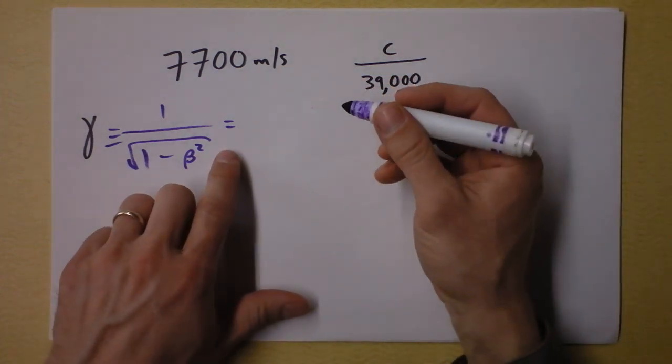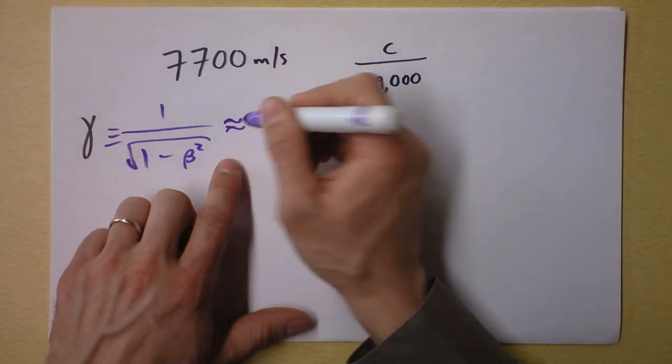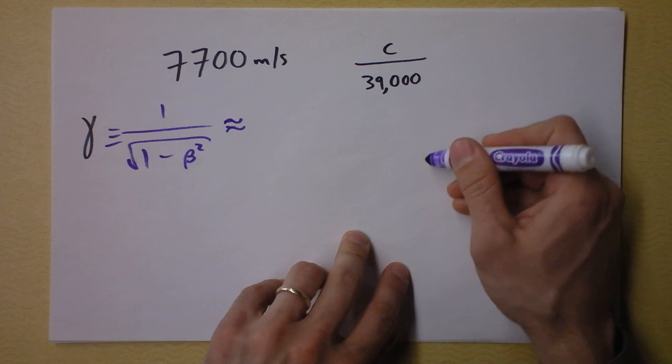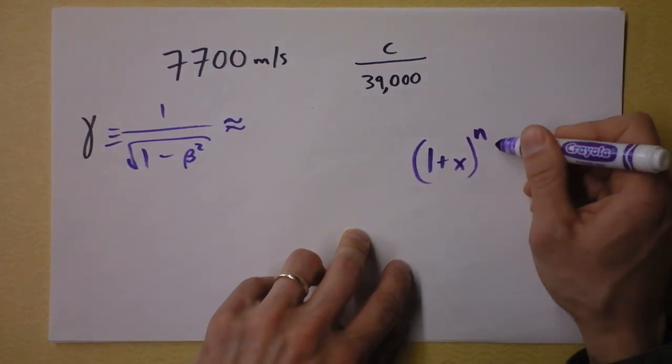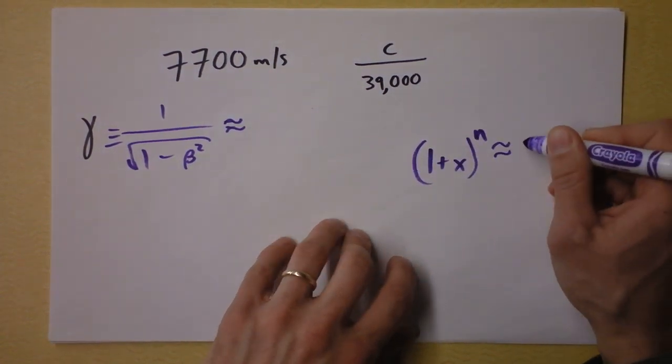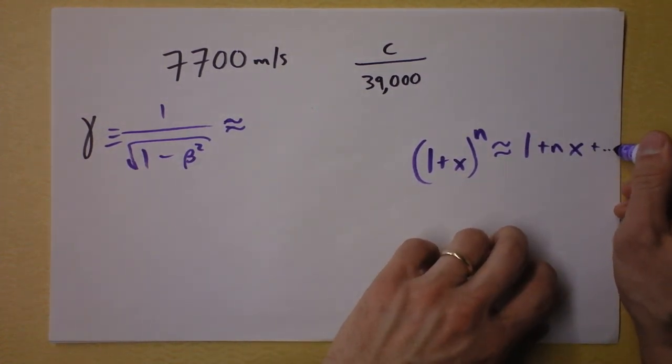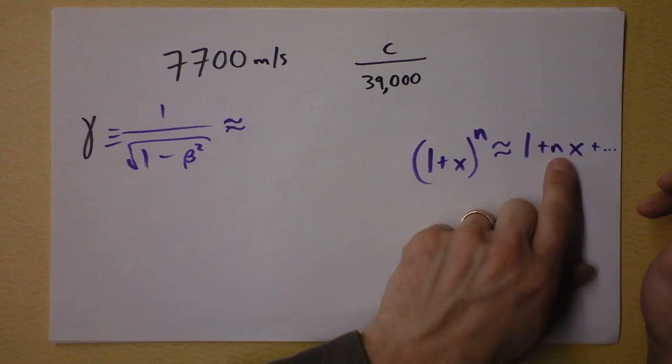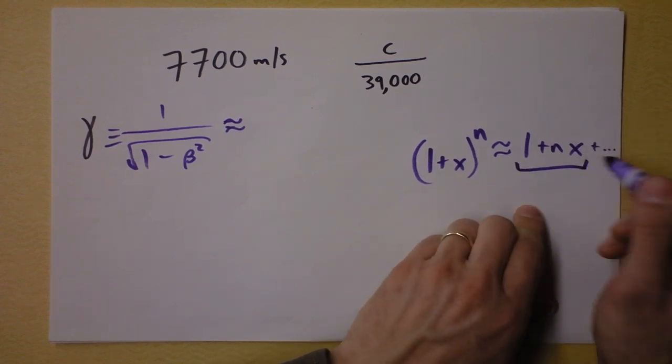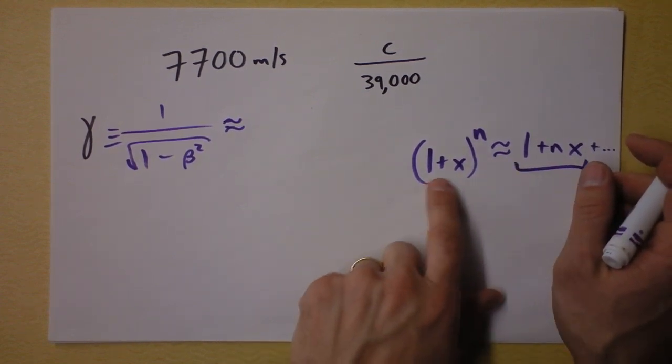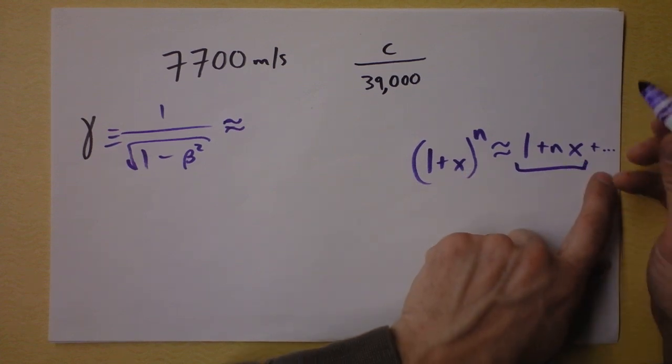So what I have to do is the binomial expansion. And I'll remind you that the binomial expansion says 1 plus x to the n is approximately the same as 1 plus n times x. I mean, it goes on here, blah, blah, blah, blah, but the first term is that. Well, the first term is 1, of course, it's kind of like 1 for small x, whatever.